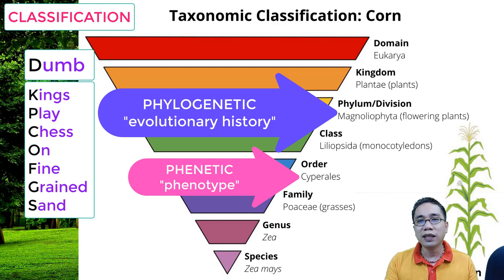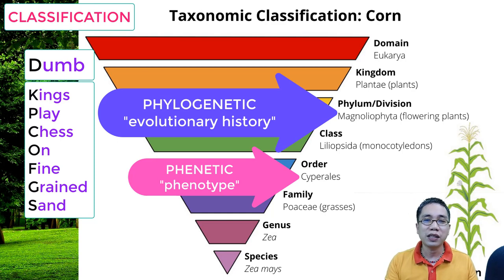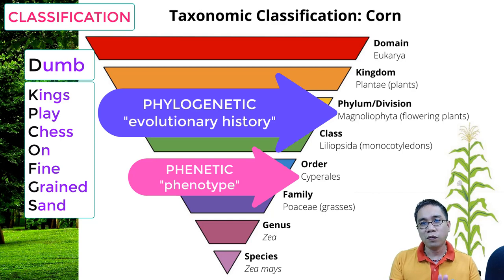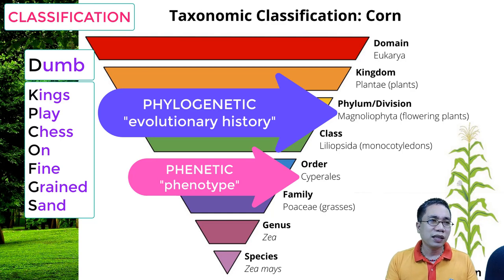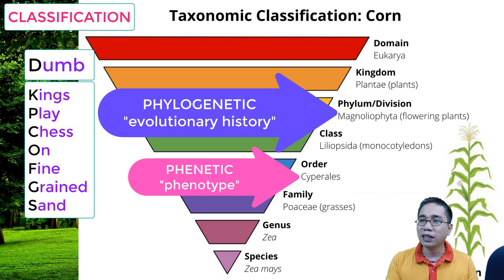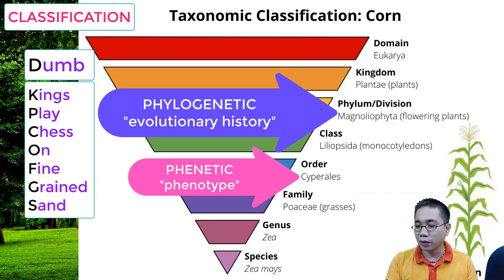So, we also have this more robust phylogenetic classification. Again, phylogenetic — we now consider the evolutionary history. And molecular classification also falls here. So, we can really be ensured of the reliability of the groupings, because we have integrated the molecular systems and methods.